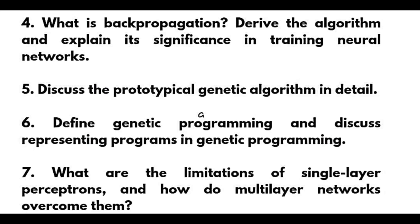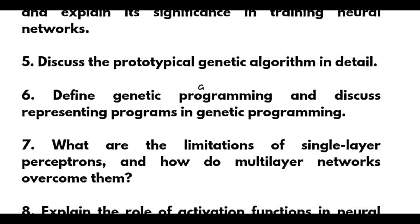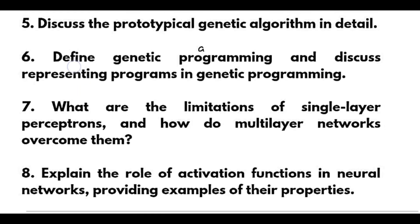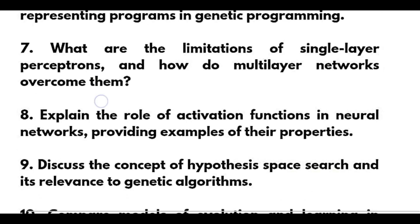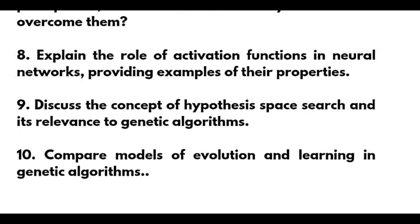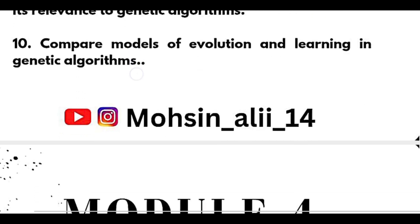Further Module 3 questions include: discuss the prototypical genetic algorithm in detail; define genetic programming and discuss representing programs in genetic programming; what are the limitations of single-layer perceptrons and how do multi-layer networks overcome them; explain the role of activation functions in neural networks with examples; and discuss hypothesis space search and its relevance to genetic algorithms, comparing models of evolution and learning.